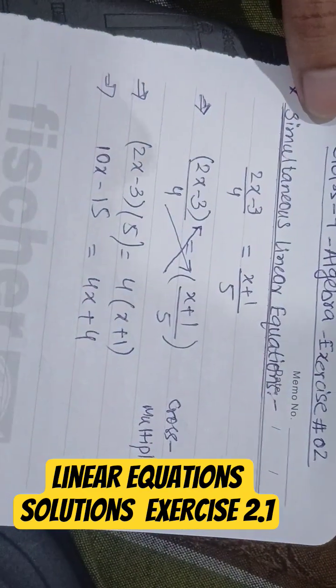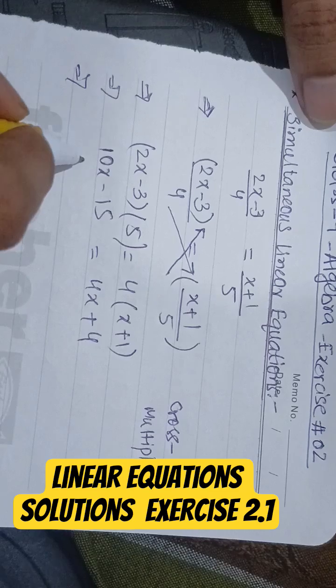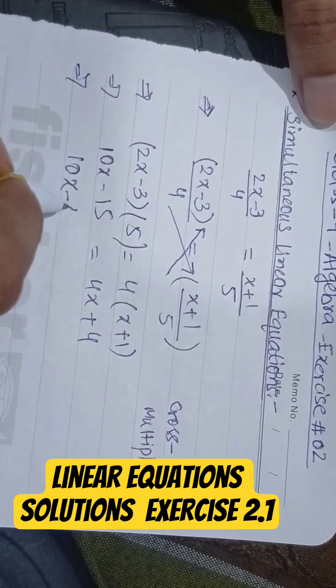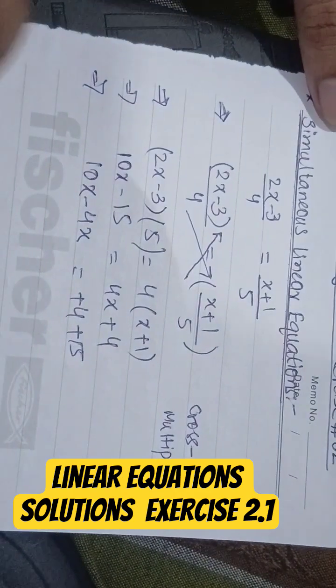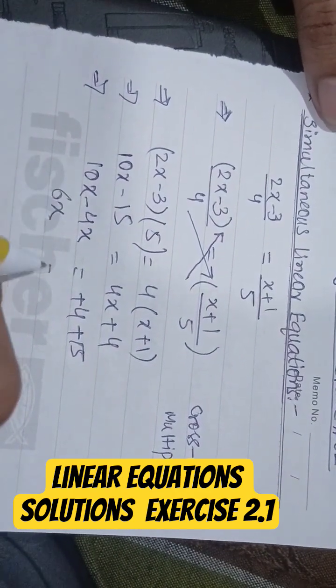We will combine coefficient terms: 10x minus 4x plus 4 plus 15. This will become 6x and this will become 19.